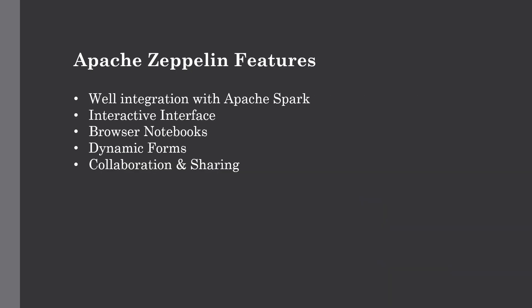The first feature of Zeppelin is that it is well integrated with Apache Spark. While many interpreters are available for Zeppelin, it provides built-in Spark integration, so we don't need to build a separate module or library for it. You also don't need to worry about setting up Apache Spark or dealing with configuration hassles when deploying on your local system. It also provides automatic Spark context and SQL context injection, and lets you view progress and cancel jobs interactively.